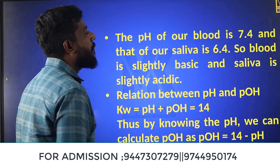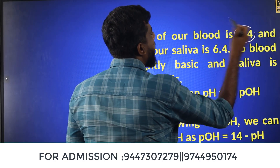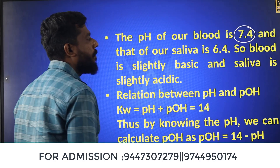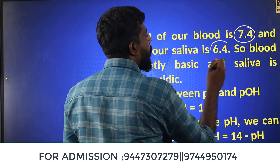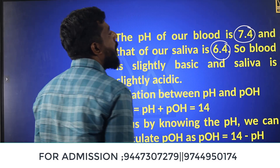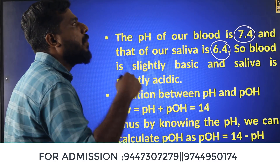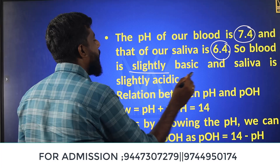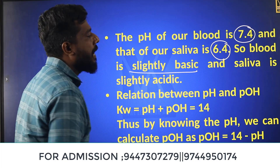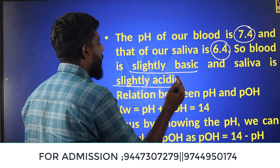Saliva has a pH of about 6.4. Blood is slightly basic. Saliva is slightly acidic and blood is a little basic.